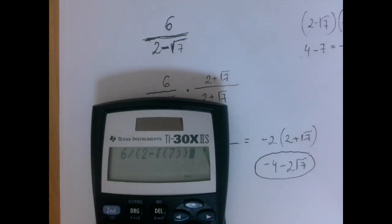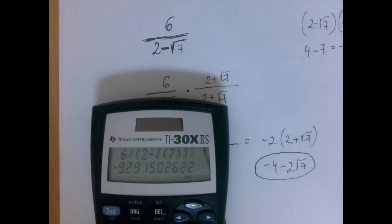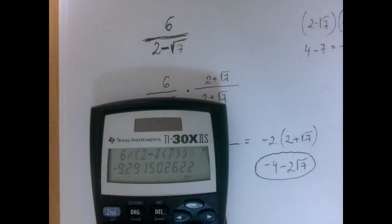So we have 6 divided by 2 minus root 7, and that should be a negative number, minus 9.2915.